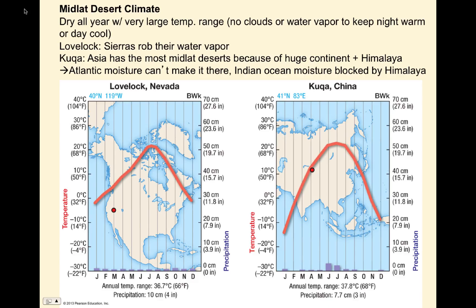Mid-latitude desert climates are dry all year with a very large temperature range — there are no clouds or water vapor to keep nighttime warm or daytime cool. Lovelock, Nevada is a good example where the Sierras simply robbed their water vapor. An area in China on the lee side of the Himalayas is another example. Asia actually has the most mid-latitude deserts because of the huge size of the continent — it's a long distance to ocean anywhere in there, plus the Himalaya range runs west to east blocking Indian Ocean moisture. Atlantic moisture can't make the journey, and Indian Ocean moisture is blocked by the Himalayas, resulting in extensive mid-latitude deserts on the north side of the Himalayas.